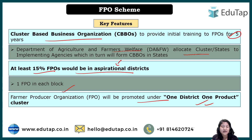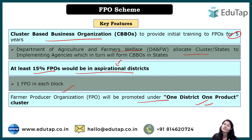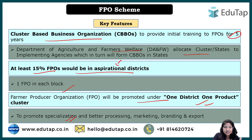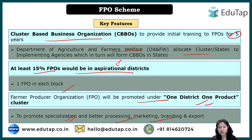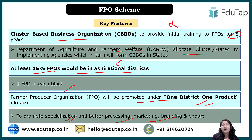The 'One District One Product' concept means that each district promotes what it is famous for — like Agra's petha. Similarly, FPOs will be promoted so that each district specializes in one product, making it famous and enabling better processing, marketing, branding, and export. FPOs are not just about growing and selling something — if 300 farmers are together with their lands, they can also have other sources of income.